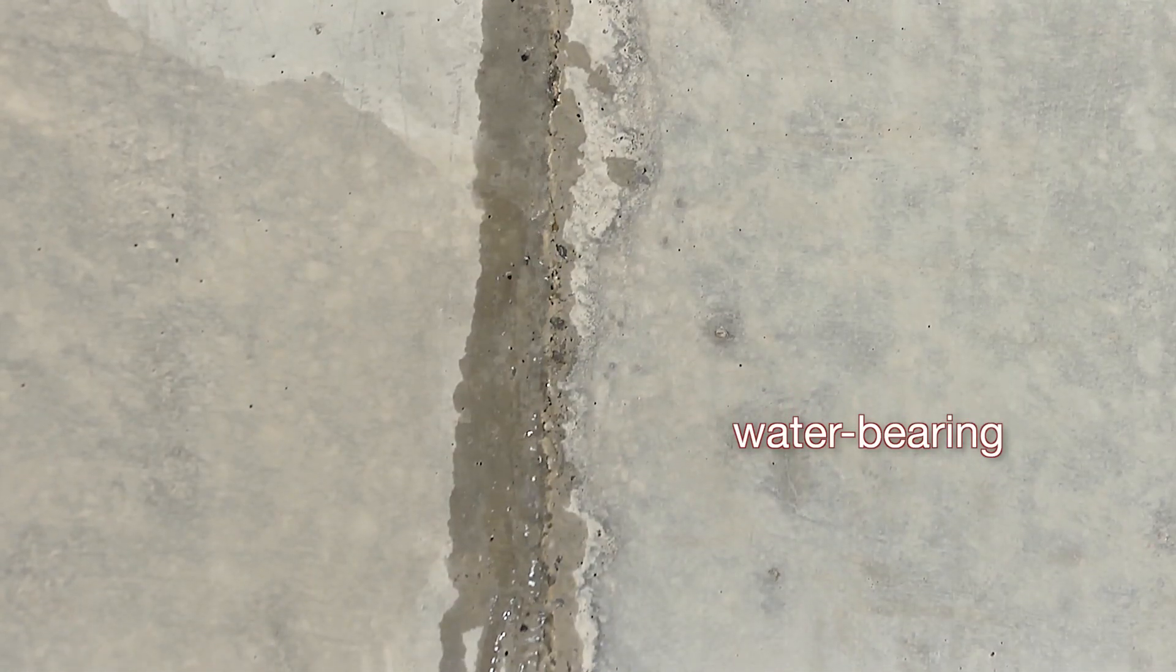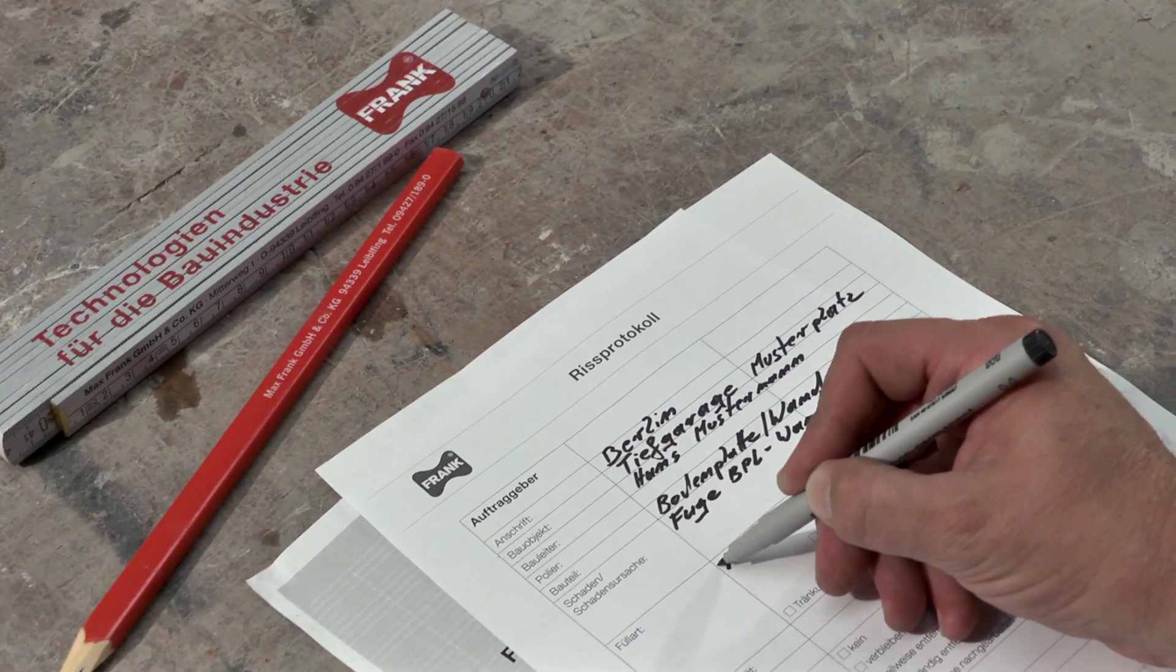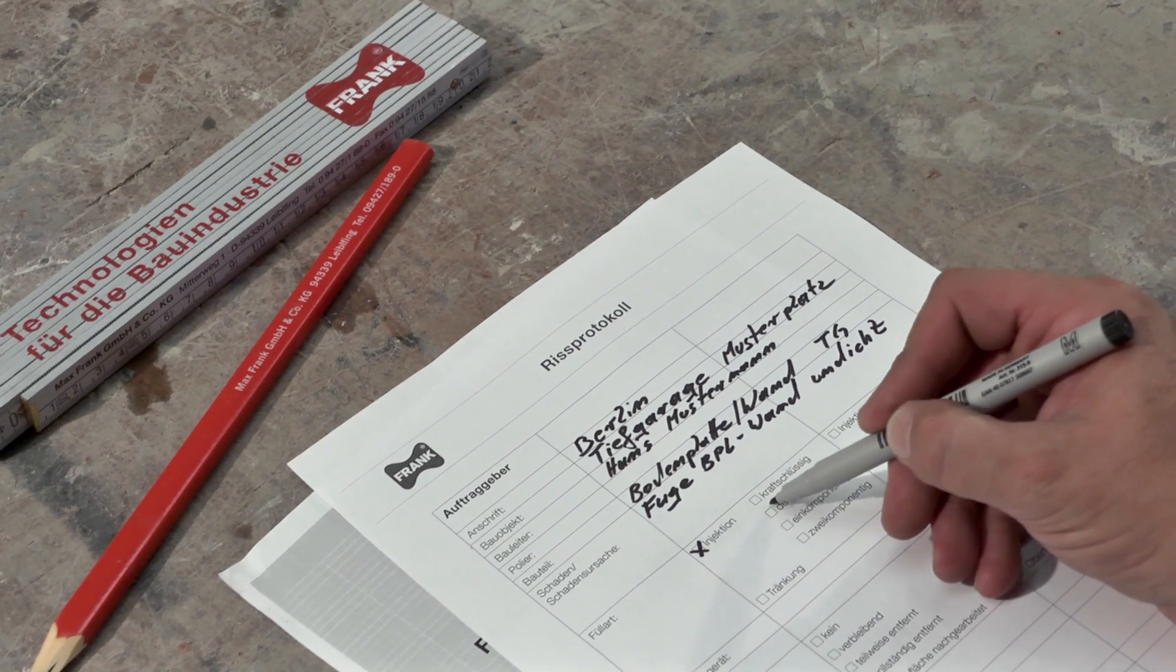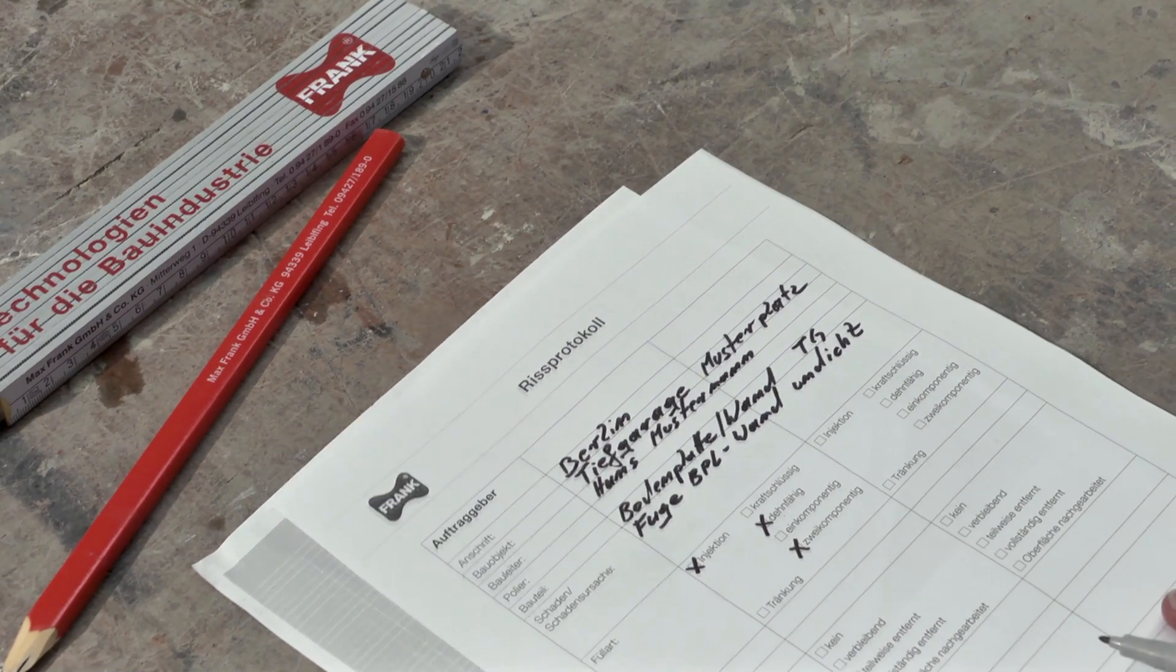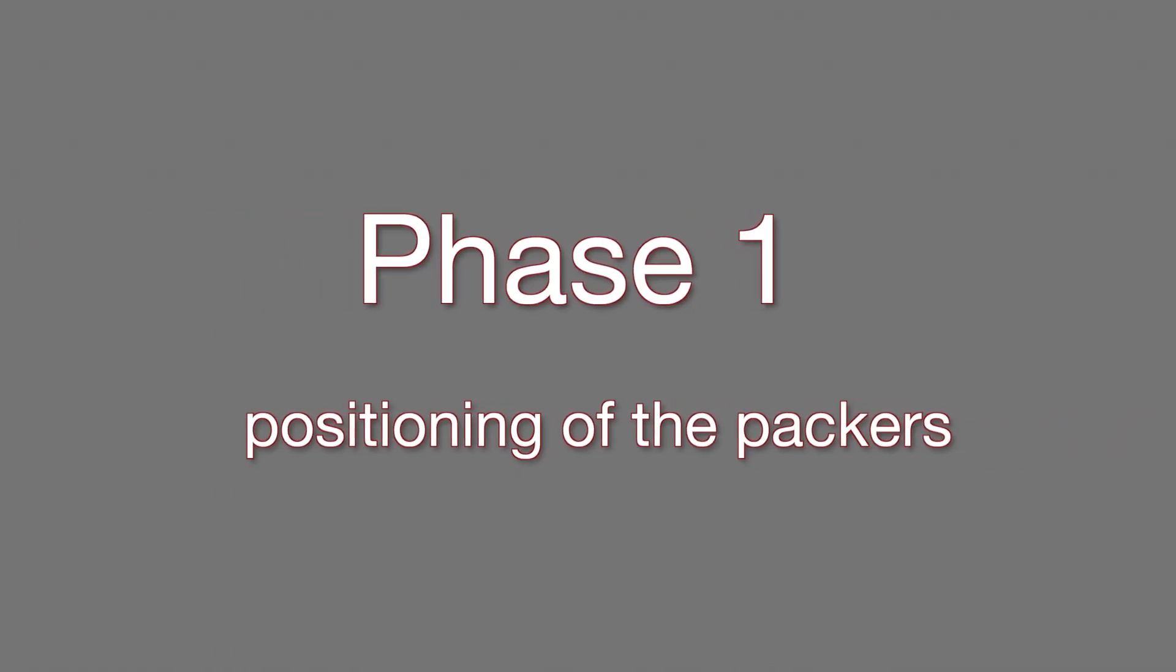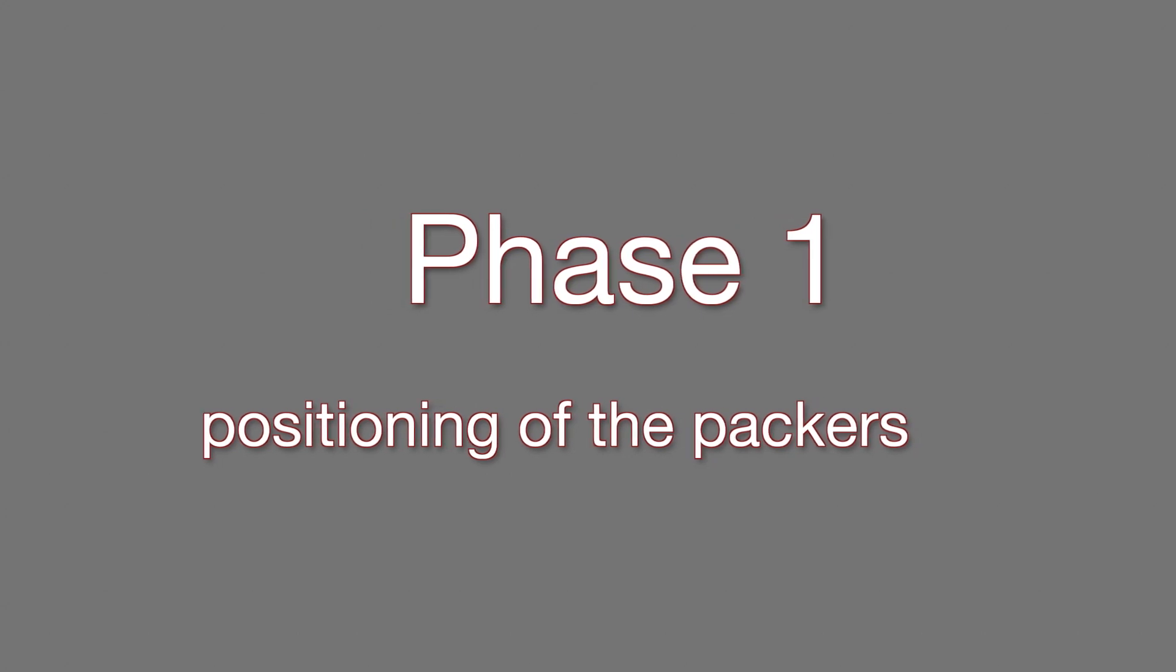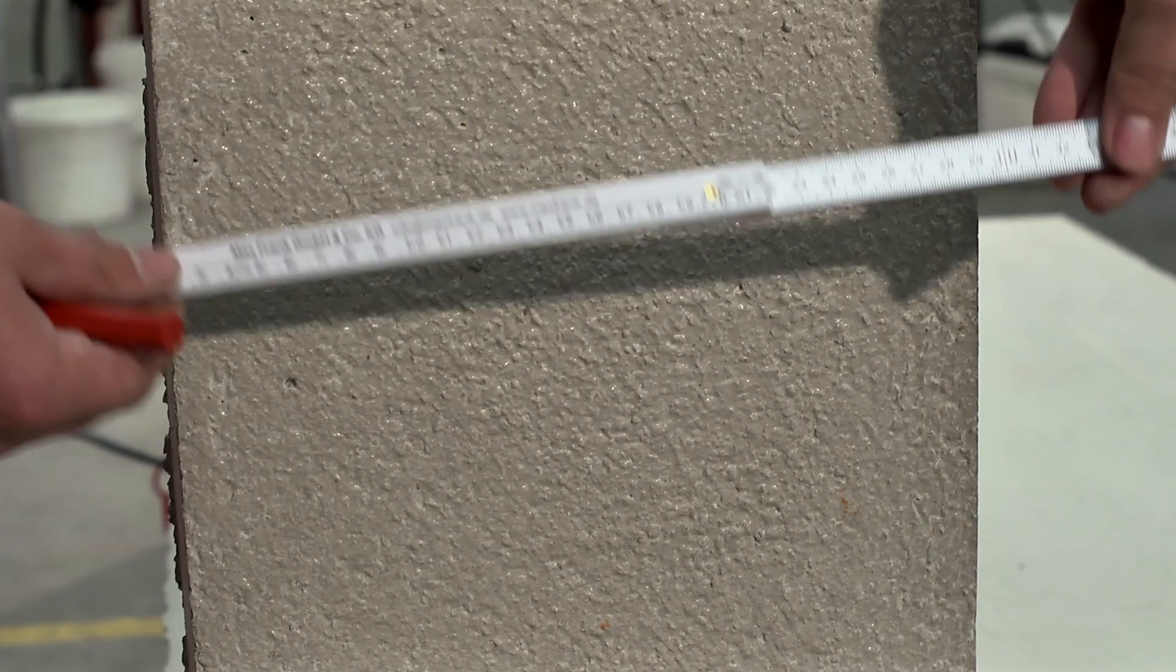The first thing to do is complete a crack injection log sheet. This log serves as a permanent record by documenting all known information on the crack and the injection measures performed. This document may be helpful in the event of possible future claims.